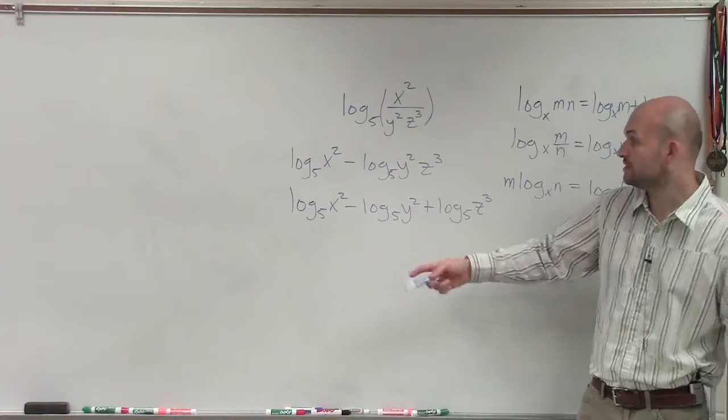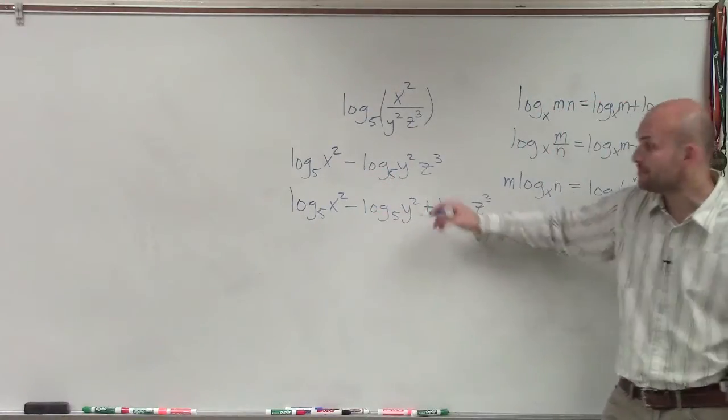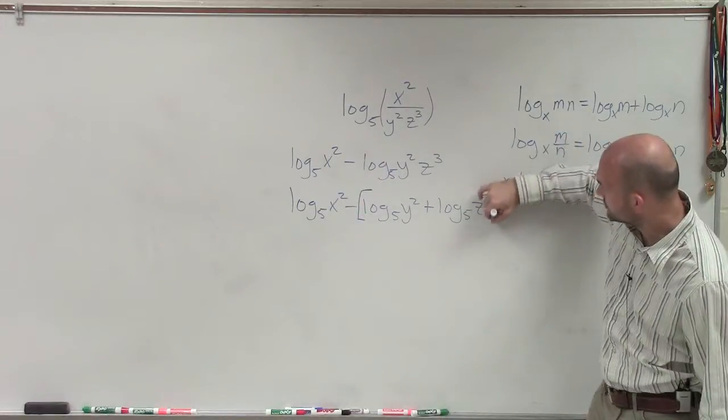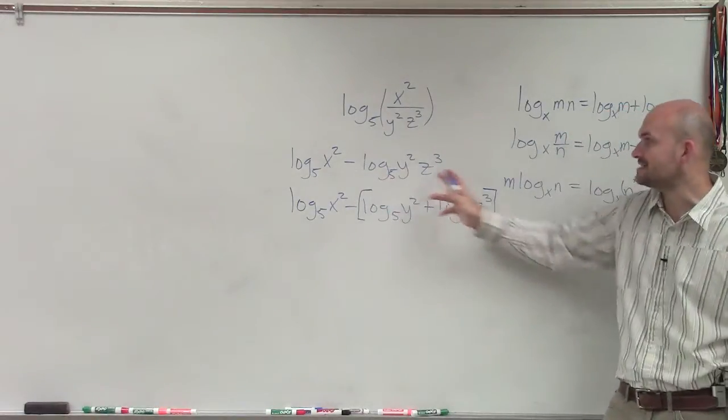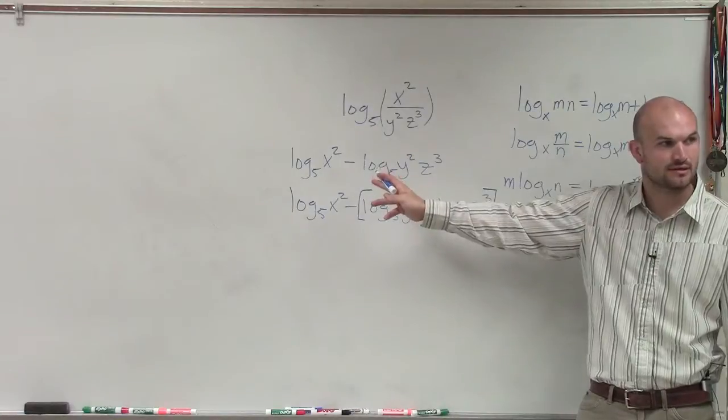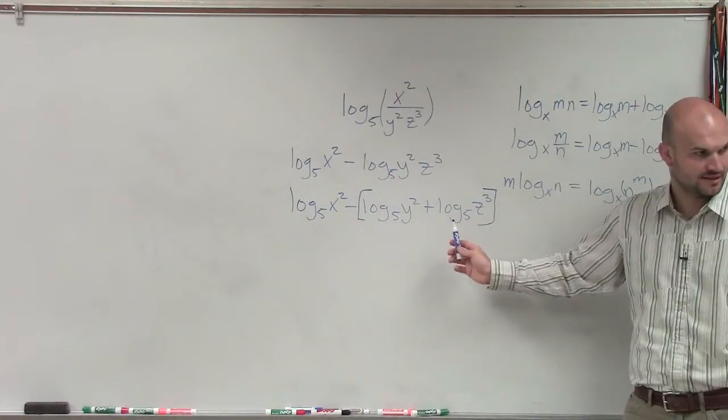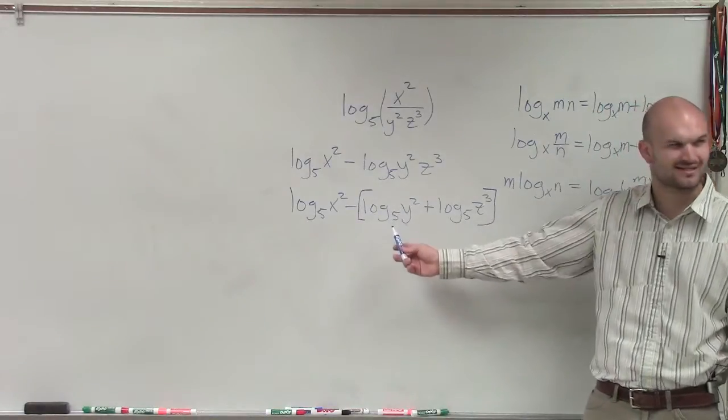So there's a couple ways you could do this. You either need to apply distributive property, or what you need to do is put parentheses around this. Because what you're doing is you're subtracting this whole expression. So you need to make sure you include brackets or parentheses in there. Because you're subtracting this whole product. Does everybody see that?